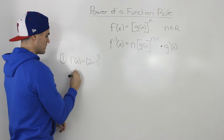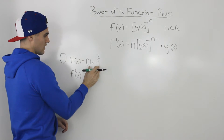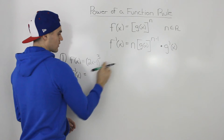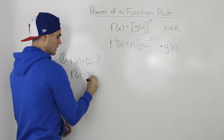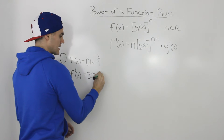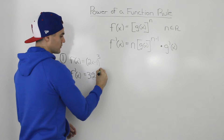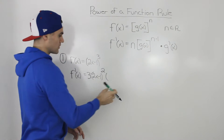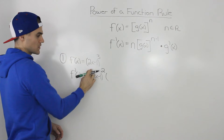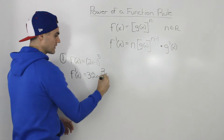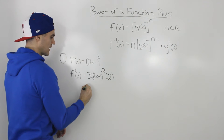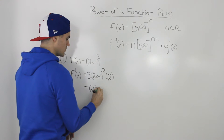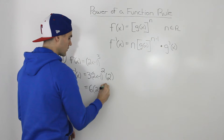To find the derivative of this function, we would first apply the power rule on the function, so we bring the 3 down, the function inside stays as is, and then we subtract 1 from the exponent, leaving us with 2 there. Then we multiply it by the derivative of that inner function. The inner function is 2x - 1, and the derivative of that is just 2. So our final derivative — multiplying the 2 and the 3 — is 6 times (2x - 1)².